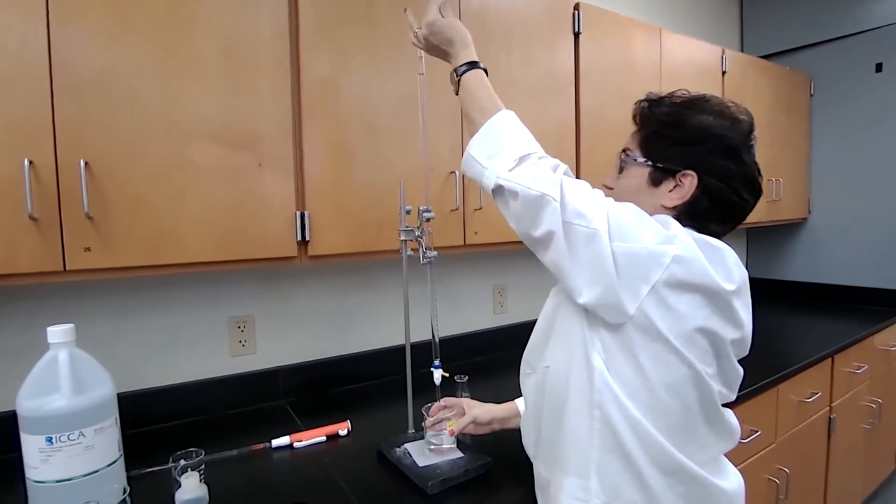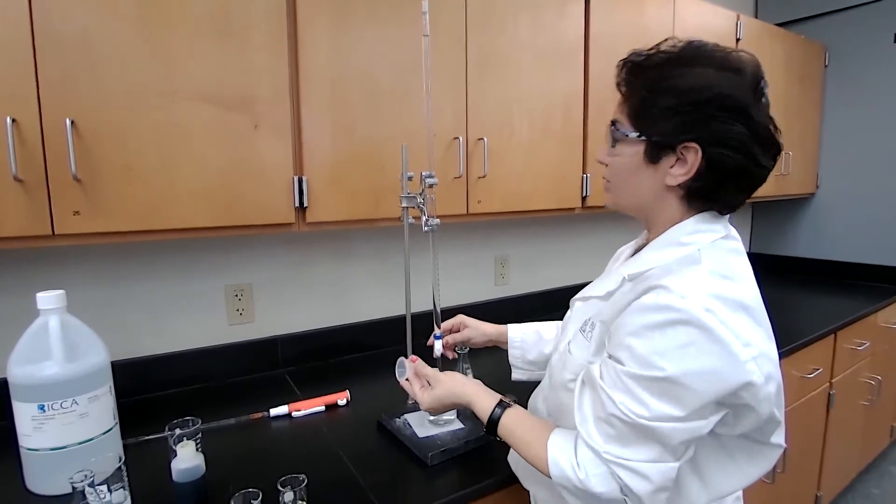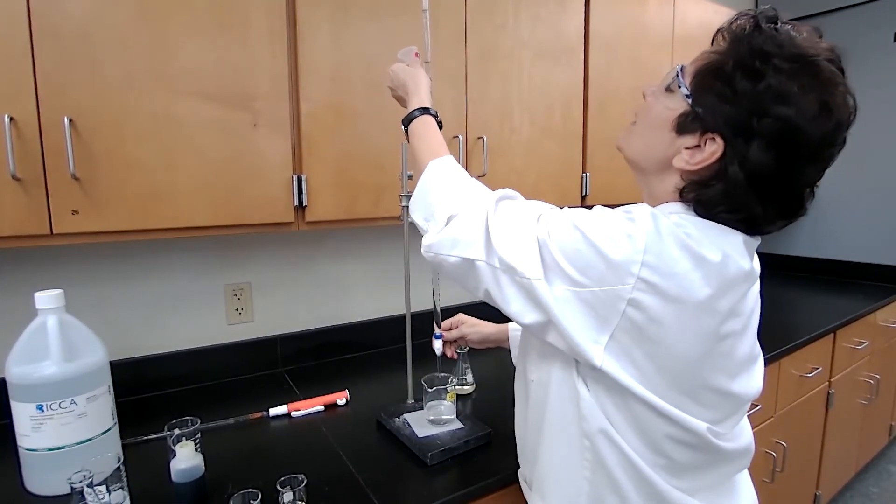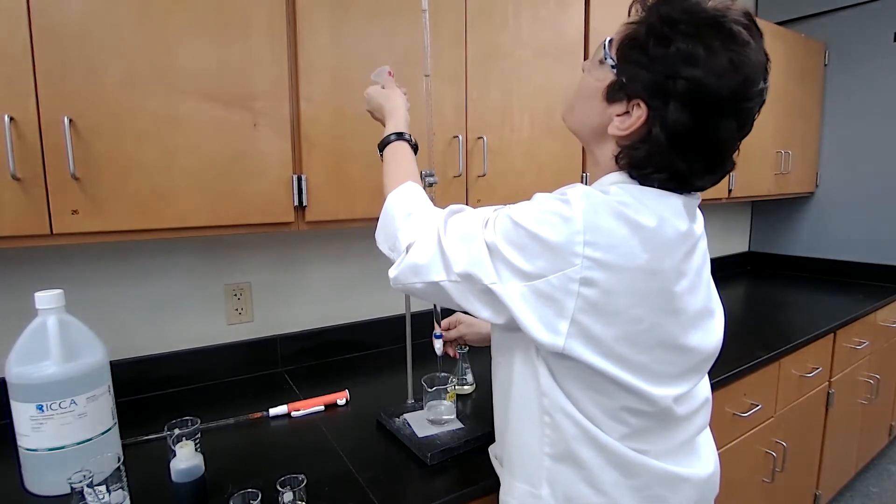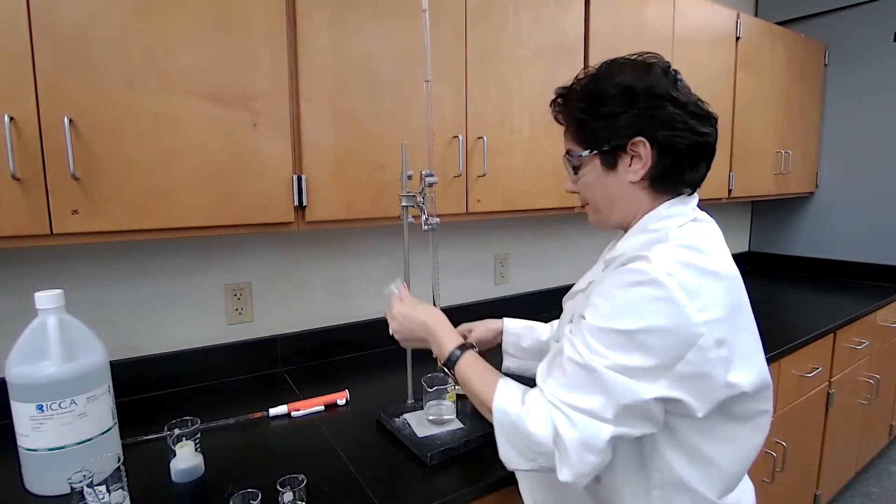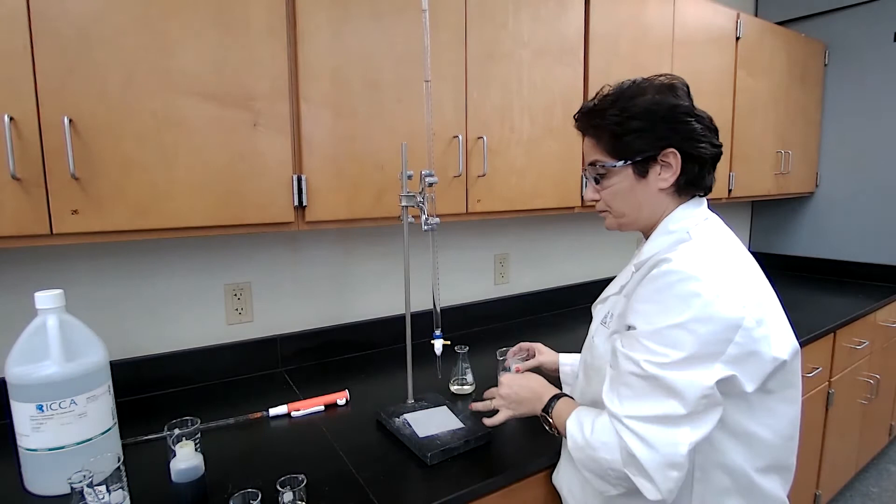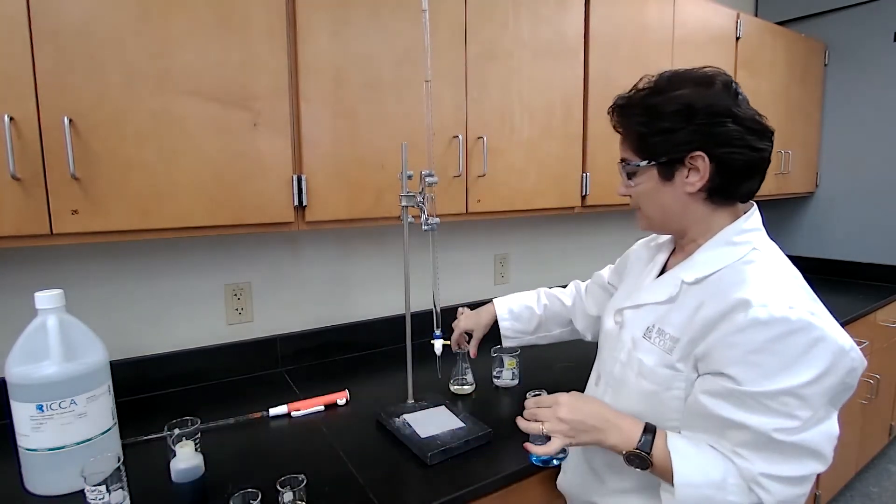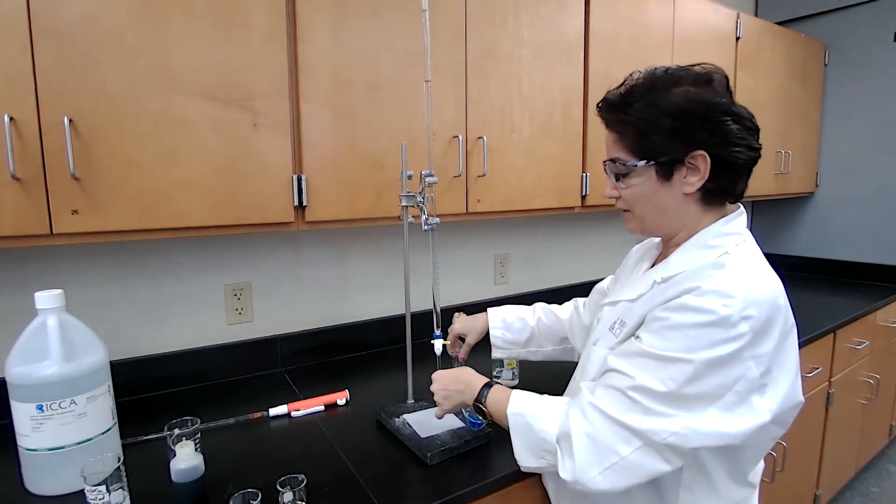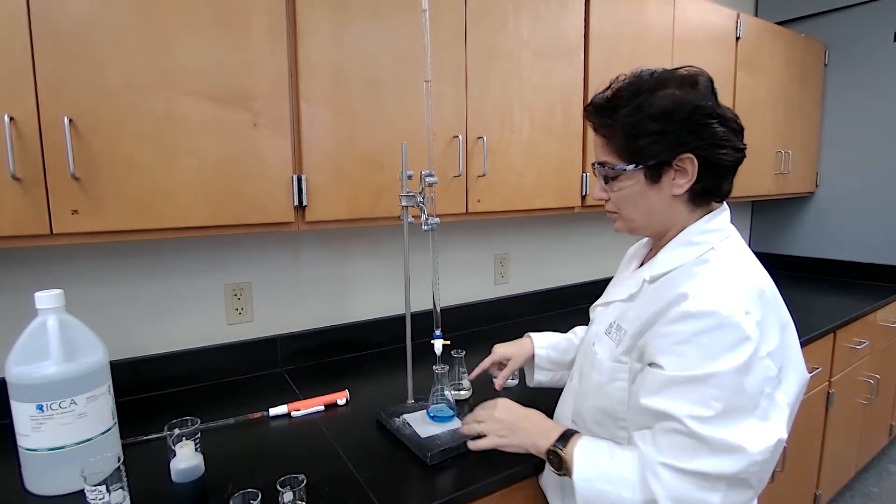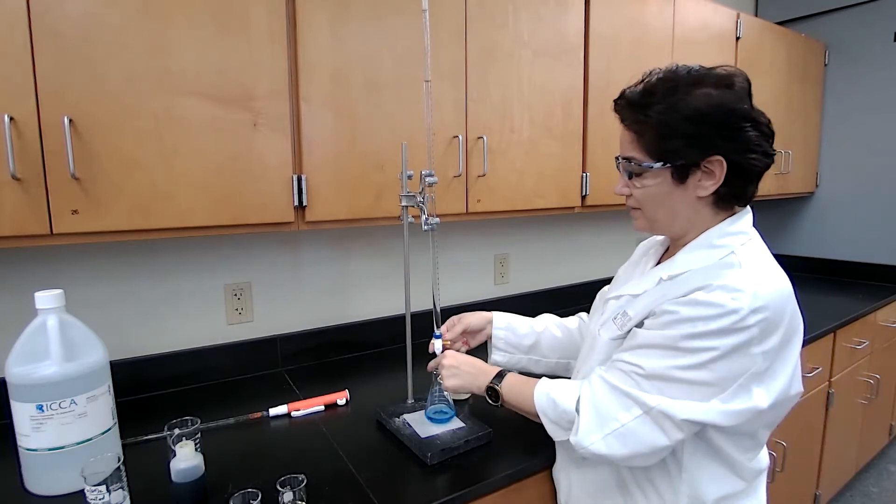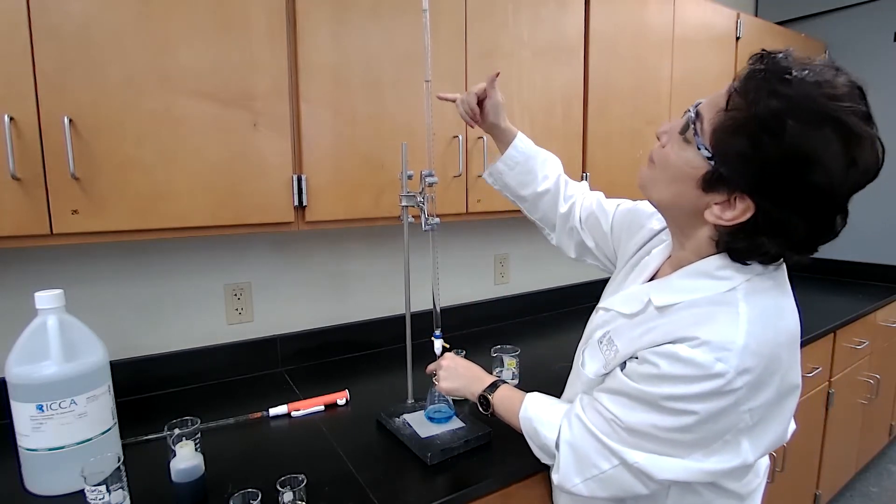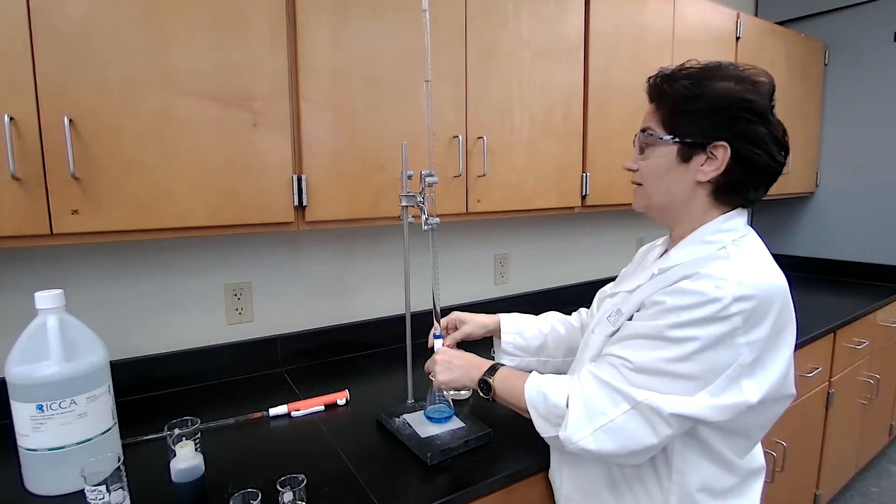This time actually, I'm going to start from different number. I'm going to start from 10. We're starting from 10. And if I add about the same amount of the acid to neutralize the base that I have, according to the first trial, I can go fast by adding 20 milliliters.